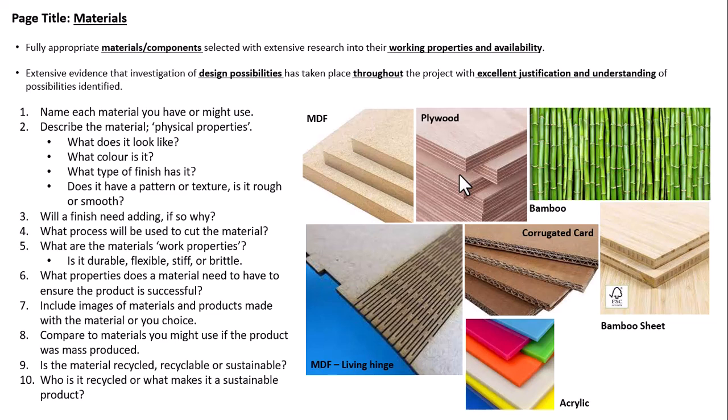On the next slide there's a list of properties and more materials to help you. Talk about the properties you need the material to have to ensure your product is successful — does it need to be rigid, does it need a curved side, does it need to be flexible? Include images — for example, if you're talking about plywood's physical properties, include an image showing the layers of veneer going in different directions so you see different colours. A picture enhances the description and helps explain the material.